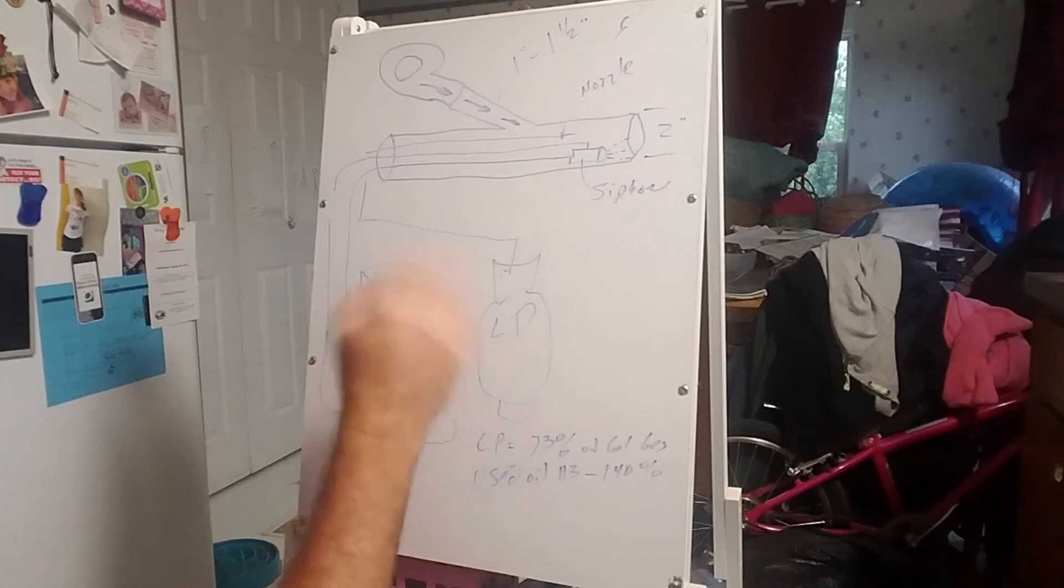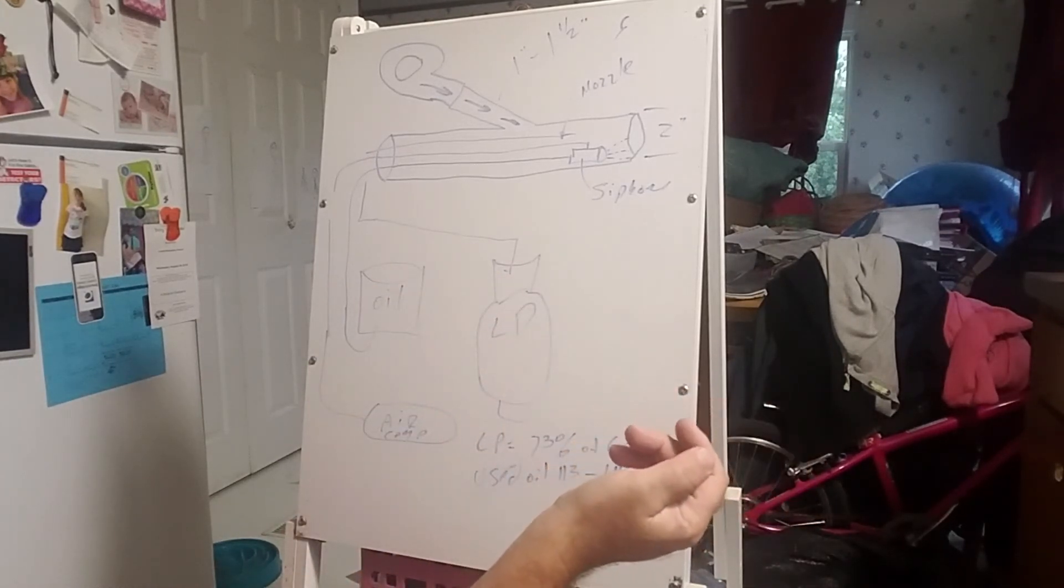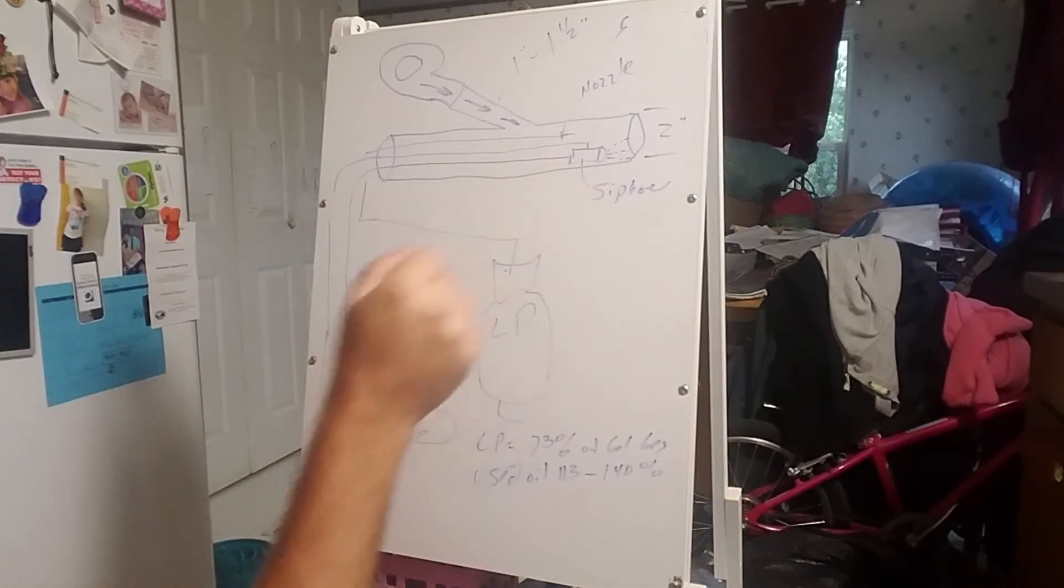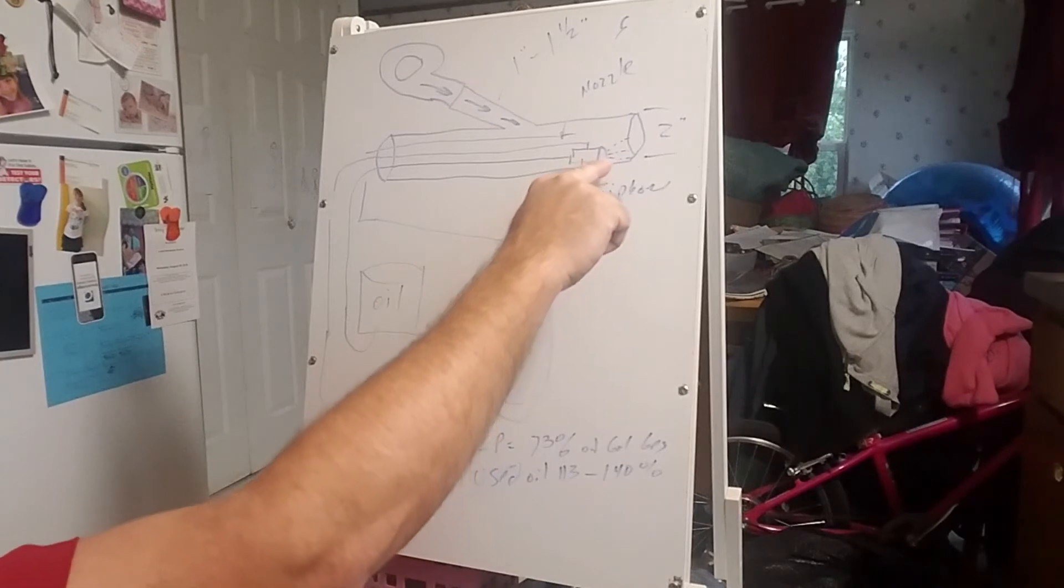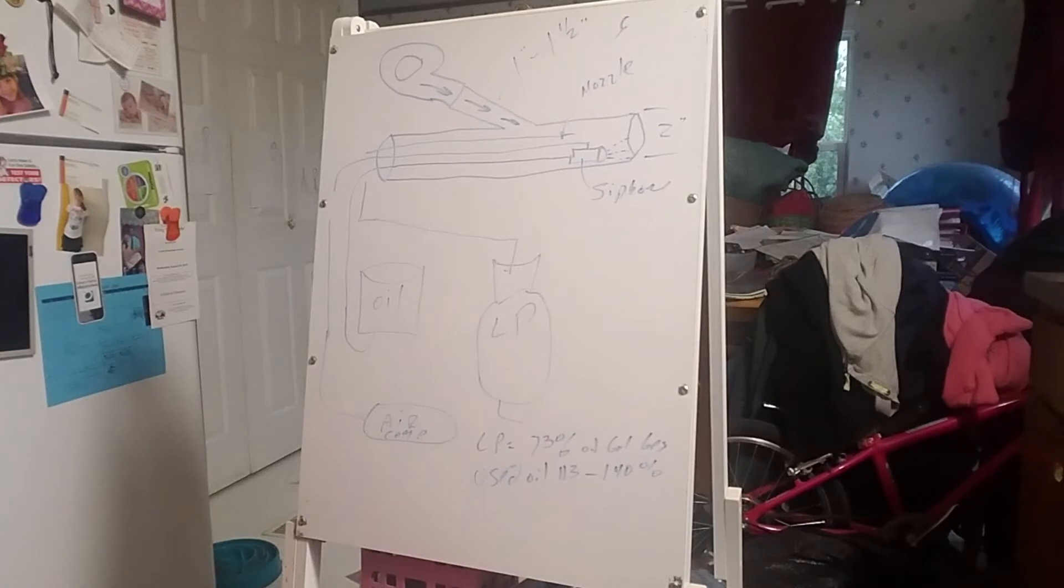You fire this thing up on LP, you get your forge up to a thousand degrees thereabouts. If you want to switch over to oil, you slowly turn on your needle valve, start injecting oil into the orifice. It atomizes, atomized oil goes in, it ignites due to the high temperature already in your forge.